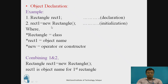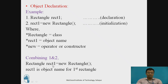Object declaration consists of declaring the particular object and then initialization — these are the two steps. Rectangle will be the class name, rect1 will be the object name, and 'new' will be the constructor, which combines the class name Rectangle and the object name rect1. Combining the two steps we get: Rectangle rect1 = new Rectangle, where Rectangle is the class name, rect1 is the object name, and new is the constructor.